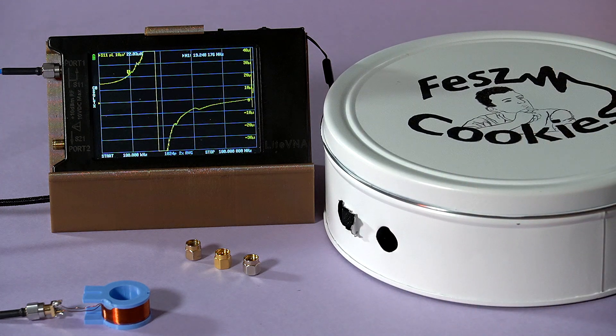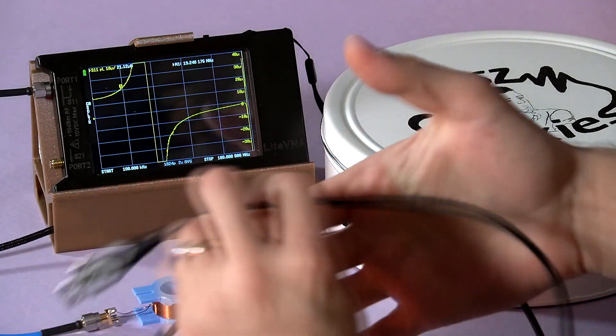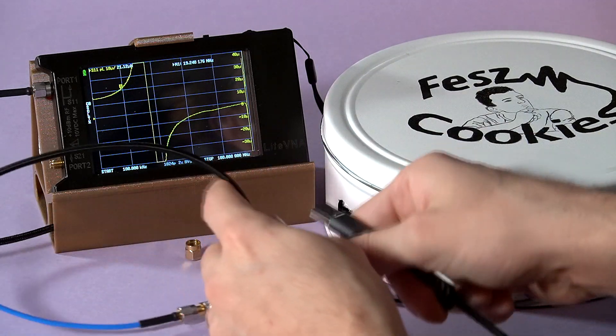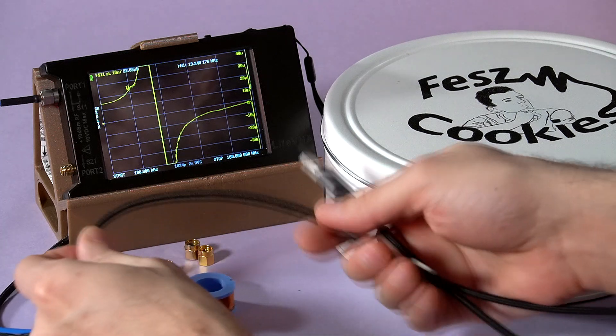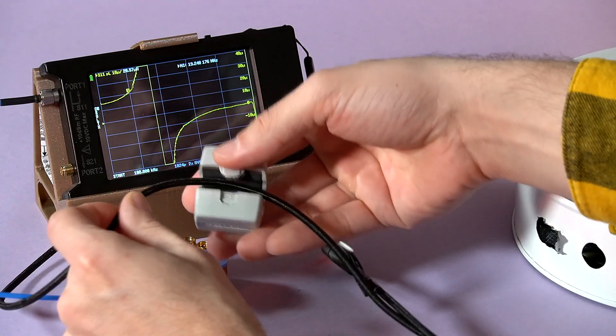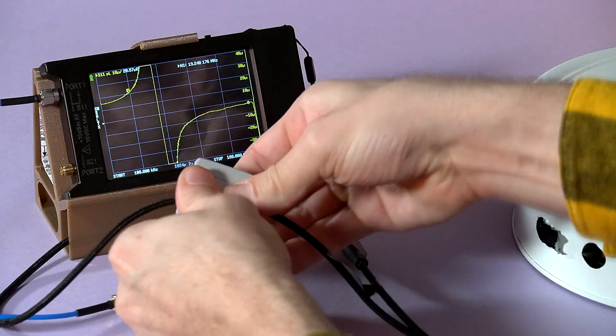and final thing to consider is the equipment's cable connections. Particularly for the nanoVNA connected to a PC, one measure that can sometimes help is adding ferrites to the USB cable to limit conducted noise.